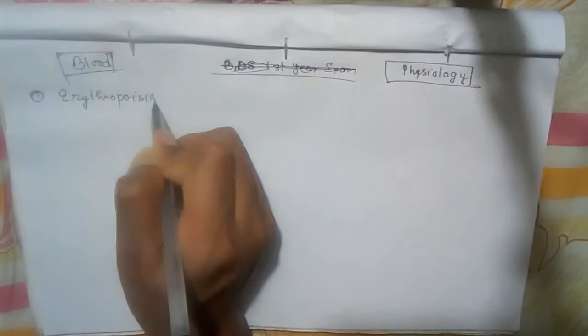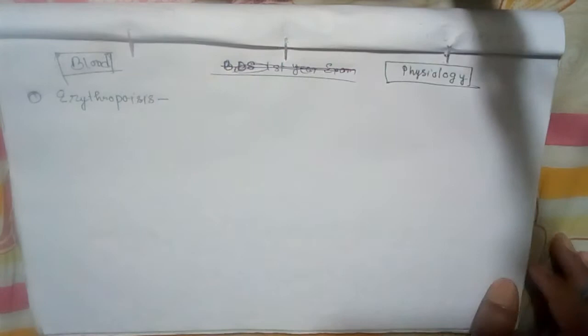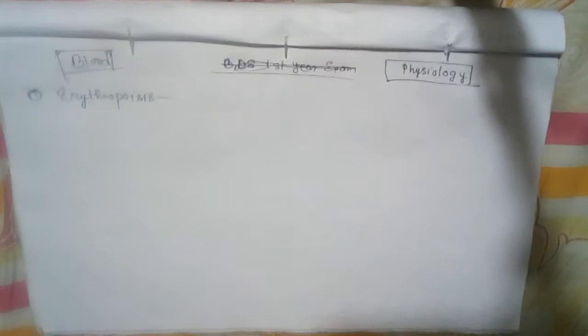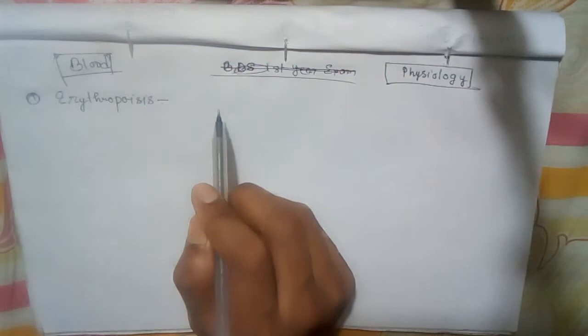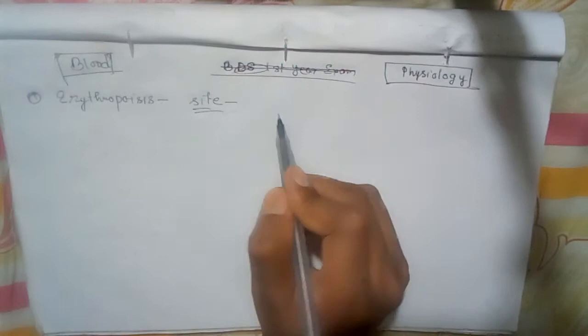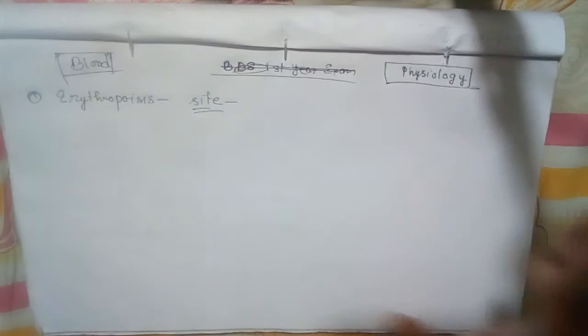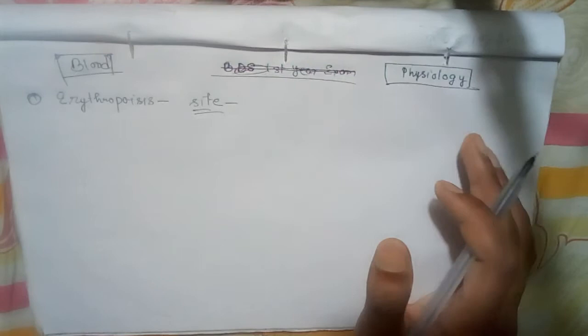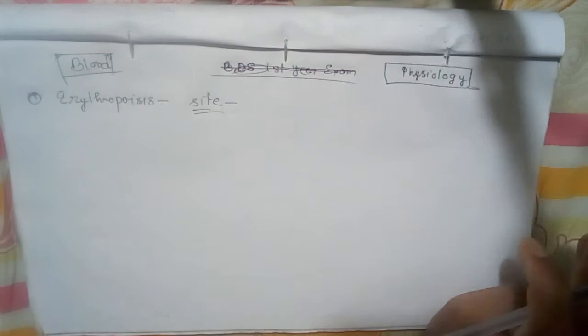Erythropoiesis: the formation of erythrocytes or RBC is called erythropoiesis. The first site of erythropoiesis — in the embryo during embryonic life — occurs in three stages. They are: mesoblastic, hepatic, and myeloid stages.